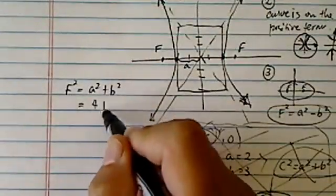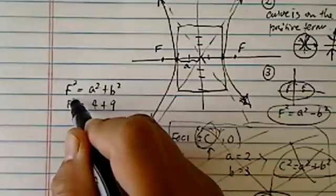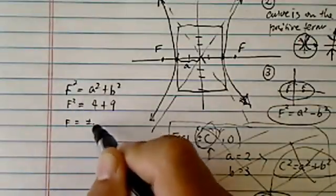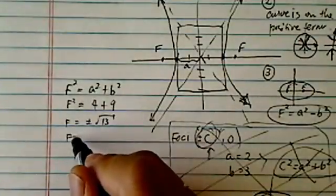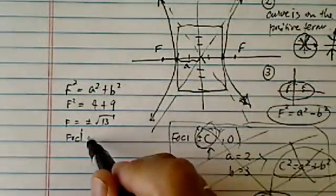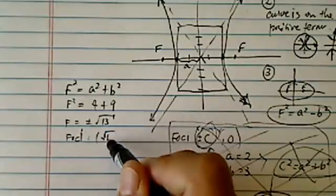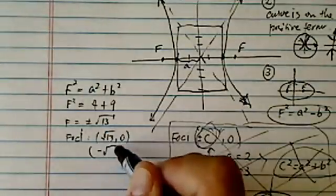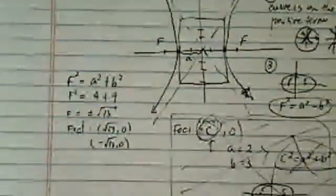Now back over here, we'll have 4 plus 9, f squared. So f equals plus minus square root of 13. So here are my foci. Over here and here, we have (√13, 0) and (-√13, 0).